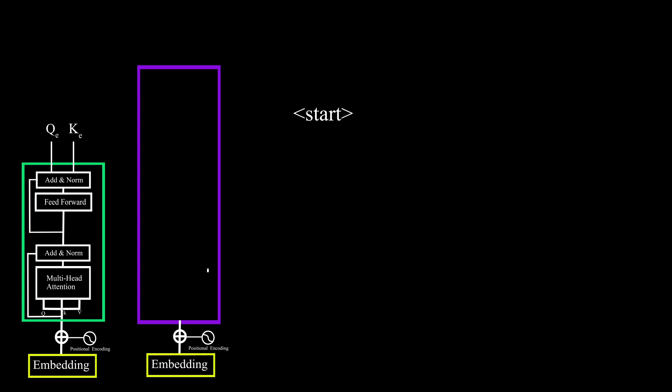Then these two operations happen in the same way as it happened in the encoder. Then the three copies of it as query, key and value will be fed to multi-attention head and output from this layer. And then the previous layer will add and normalize using add and norm layer.